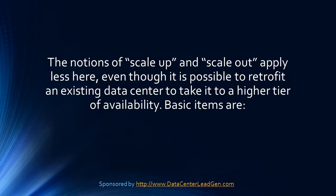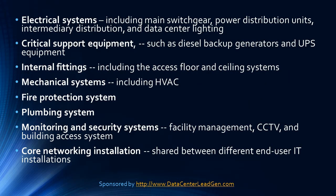Basic items include electrical systems — main switchgear, power distribution units, intermediary distribution, and data center lighting. Critical support equipment such as diesel backup generators and UPS equipment. Internal fittings including the access floor and ceiling systems. Mechanical systems including HVAC. Fire protection system, plumbing system, monitoring and security systems. Facility management, CCTV, and building access system. Core networking installation, shared between different end-user IT installations.